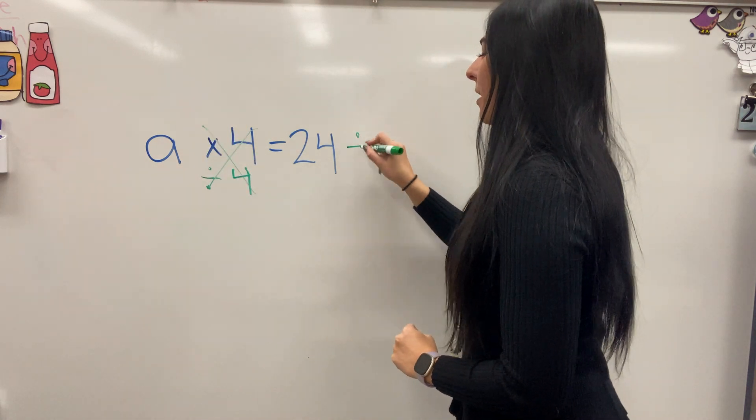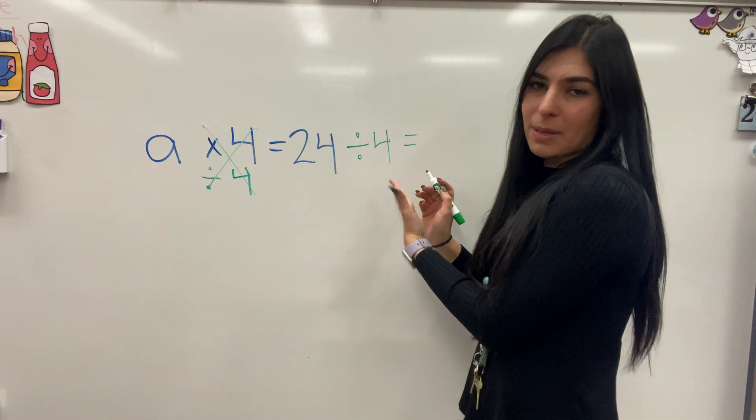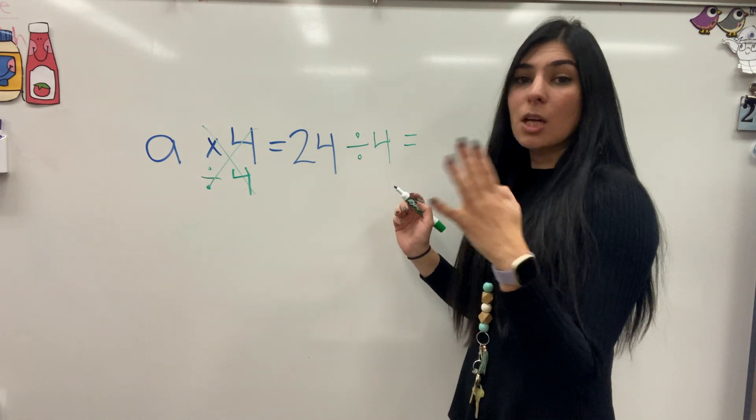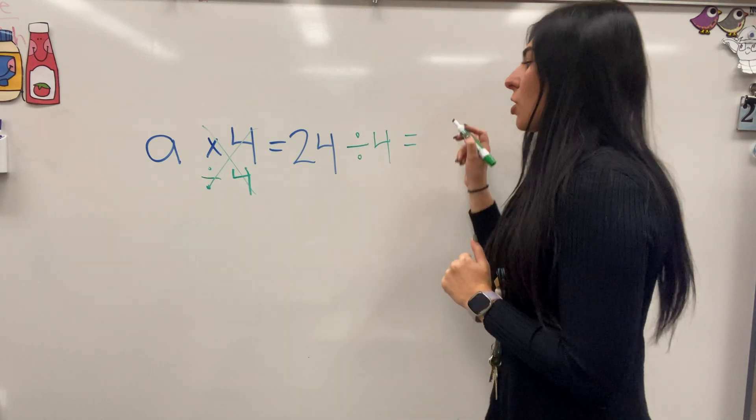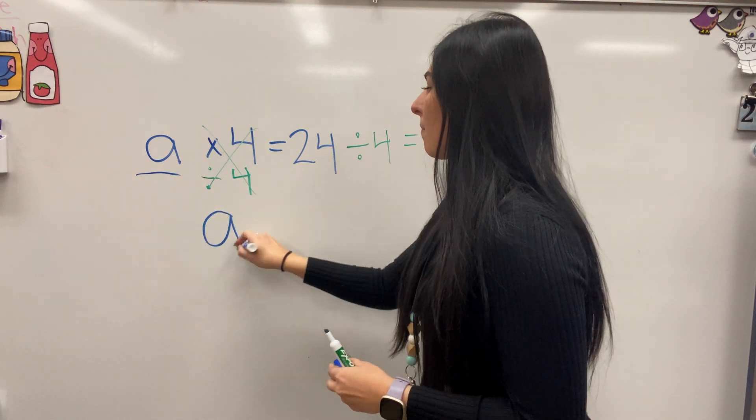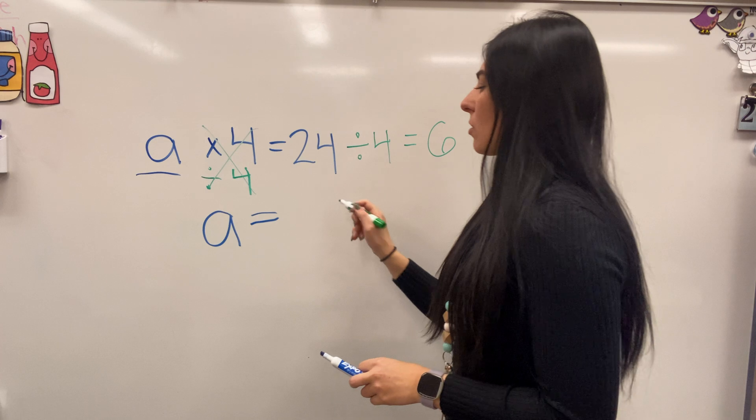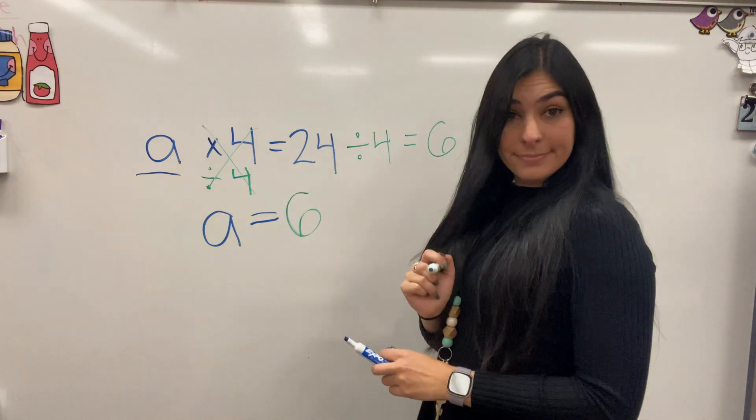And we're going to divide by 4 on this side, which means we can still do a skip counting. 4, 8, 12, 16, 20, 24, 6. So that would mean this equals 6, which means I still have my A equals 6. There we go.